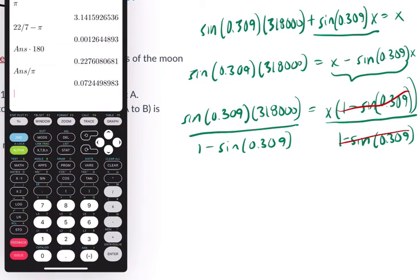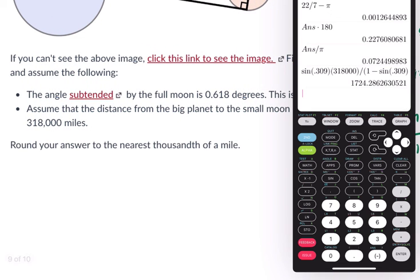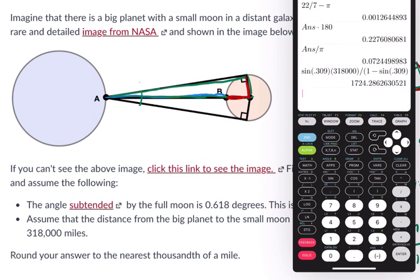So what do we get? Well, we're going to do it in pieces. Sine of 0.309 times 318,000. And that's divided by 1 minus the sine of 0.309. Okay, my parentheses there. Okay, I think this is good. Yes. So we get 1724.286. So I think the rounding here, what was it? To the nearest thousand. So 1724.286. And that gives us the radius of the moon here. That's a nice approximation. Thanks.